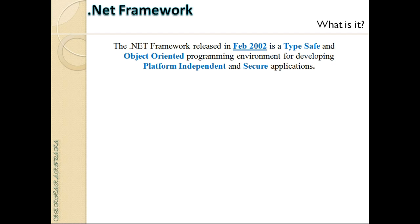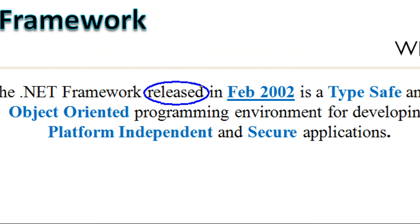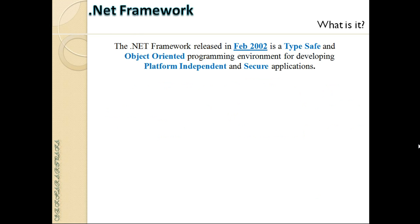We'll start with what is the .NET framework today. The .NET framework was released in February 2002 as version 1.0. It is a type-safe, object-oriented programming environment for developing platform-independent and secure applications. The highlighted keywords — type-safe, object-oriented, platform-independent, and secure — are all critical to understand.